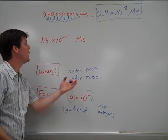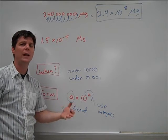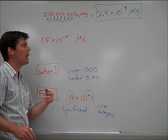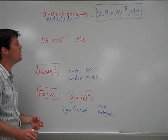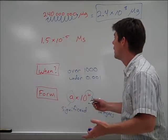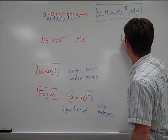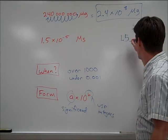Now, let's look at a reverse example. Here, we're given a number in scientific notation. We want to convert this and write it in standard notation. So, I have 1.5 times 10 to the minus 5 megaseconds. I want to write this in standard notation. So, here's my process. I'm going to go ahead and write the 1.5. And I'm going to leave the unit megaseconds.